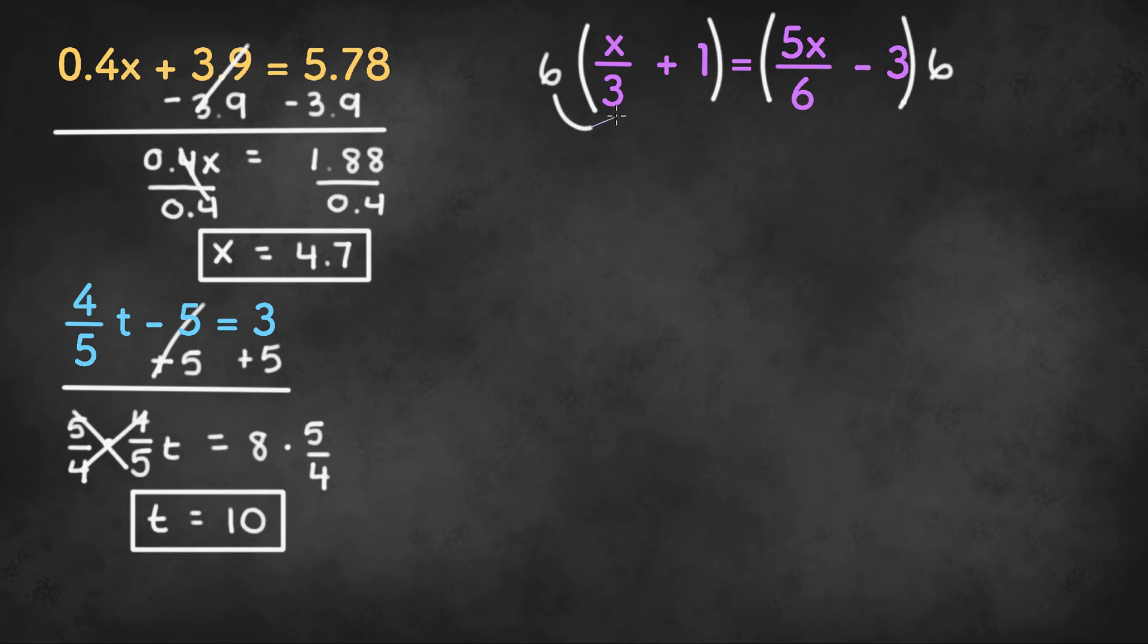We need to distribute the 6 to the x divided by 3 and x divided by 1. And then we're going to distribute the other 6 to 5x divided by 6 and negative 3.